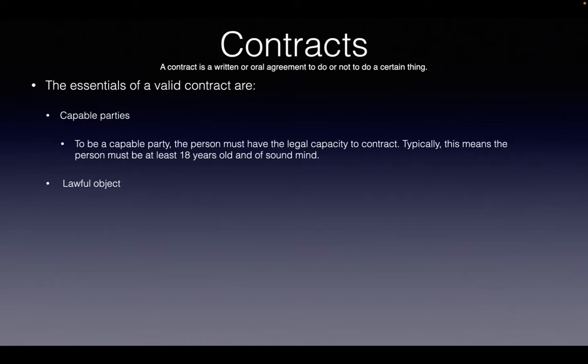The second thing is lawful object — a contract must be entered into for legal purposes. Most contracts in real estate are for a legal purpose. But if I'm trying to create a contract to give away my house to escape an IRS claim or a lawsuit, then it's no longer for a lawful object. This is about legal purpose — not just the house, but why I am selling or contracting to give it away.